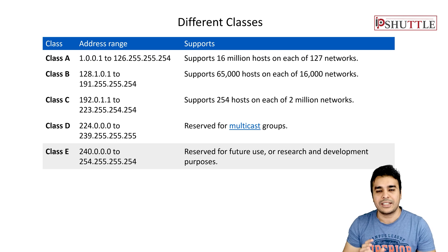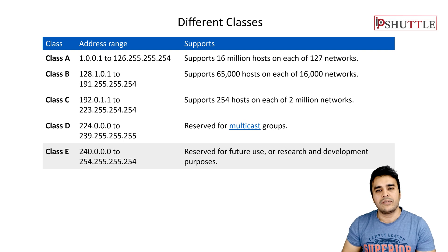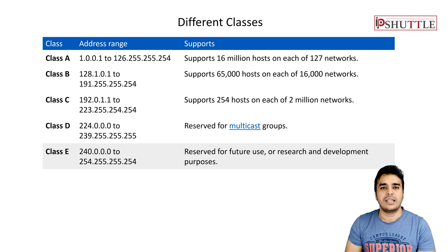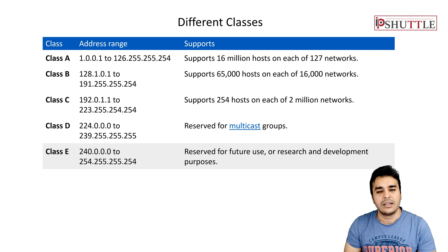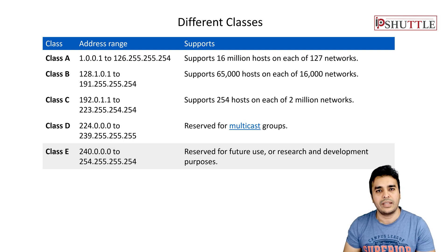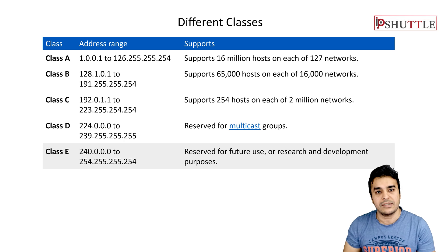Just remember for now there are five different classes, and out of these, three are widely used. Class D is a multicast group of IP addresses and is not used in the network unless you are running multicast. Class E is a reserved class.